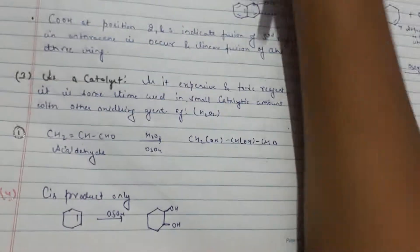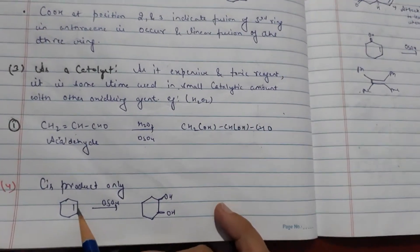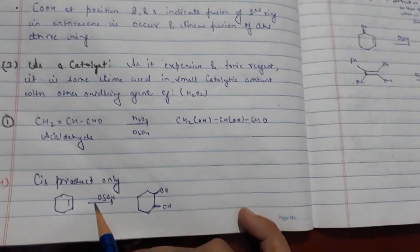This is a cycloalkene and Osmium tetraoxide will make OH, OH on double bond here.